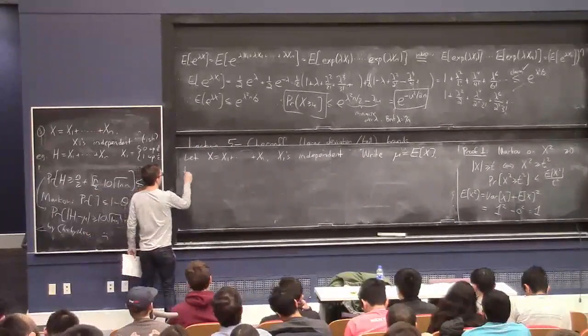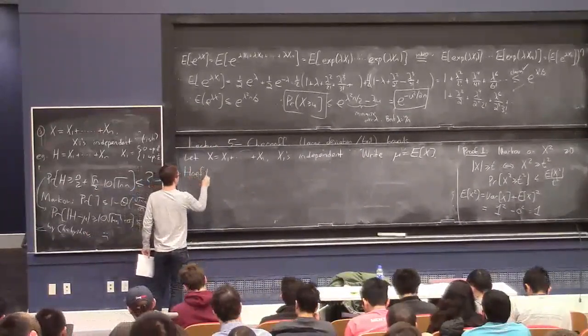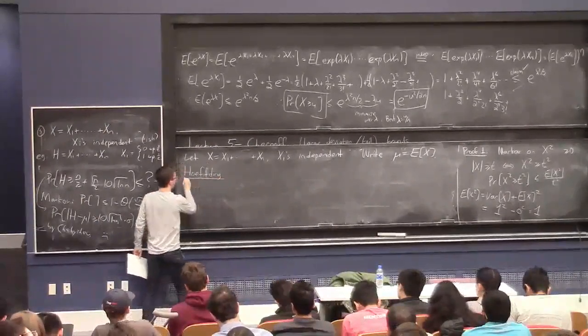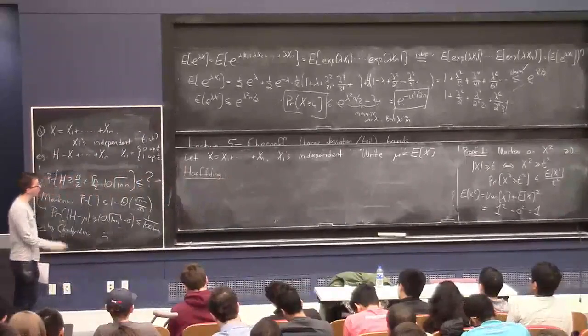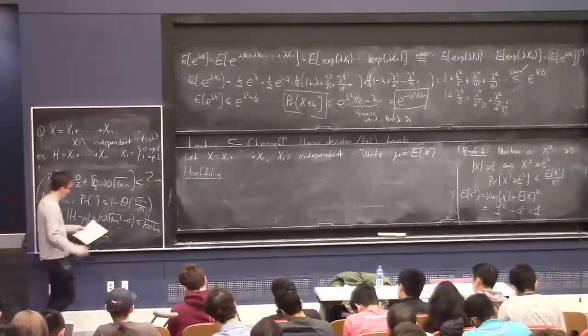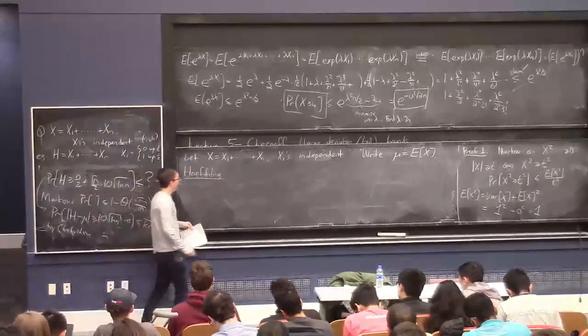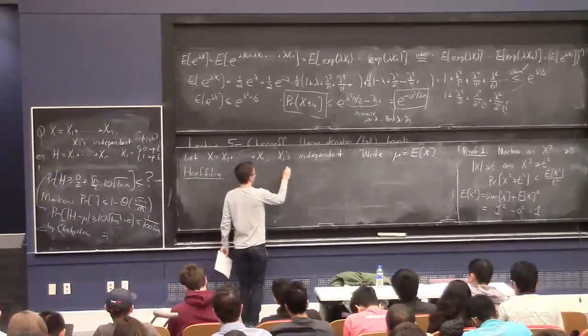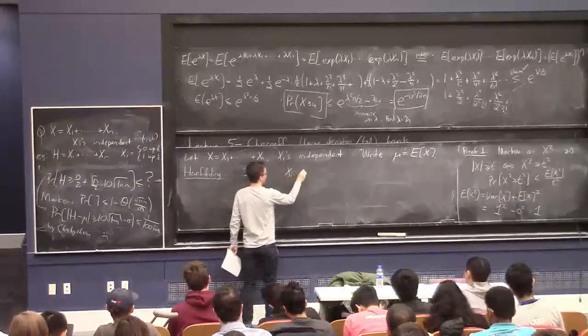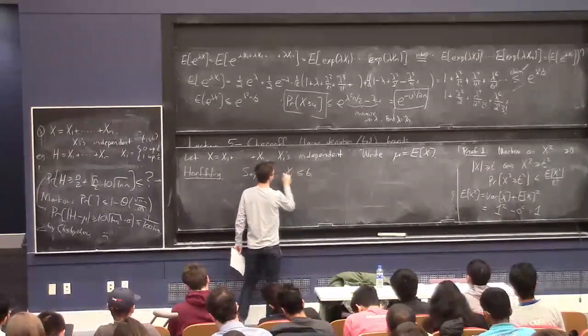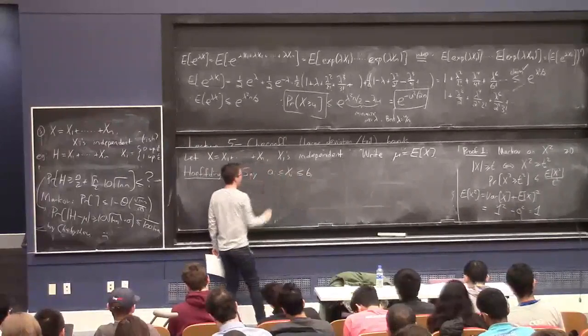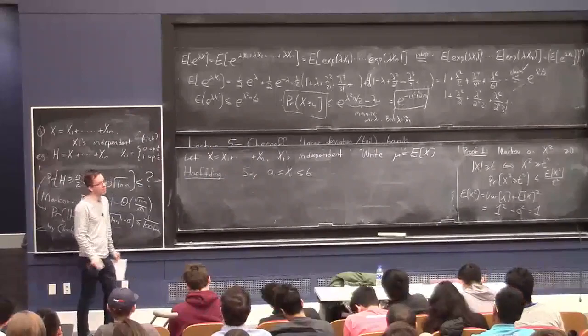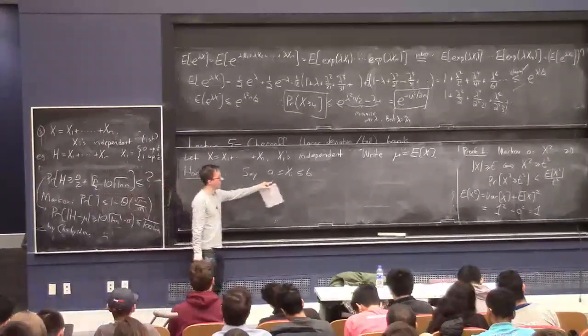So the first bound I'll tell you is sometimes called Hoeffding bound. I don't really know what the standard Anglo pronunciation of his name is. So we'll say Hoeffding. And here we'll assume that Xi takes values in a bounded range. So we'll say it's between two real numbers, AI and BI. Usually all the A's are the same, and usually all the B's are the same. But just in case, you can take different bounds for each one.